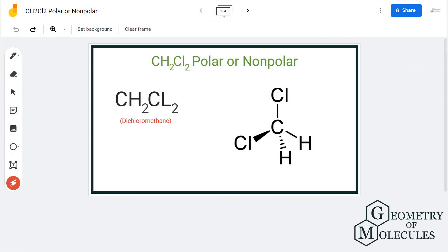Hi guys, today in this video we are going to determine the polarity for CH2Cl2 molecule. It's a chemical formula for dichloromethane. To understand its polarity, we will first look at its Lewis structure followed by its shape.